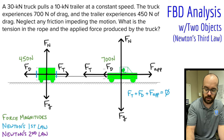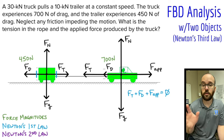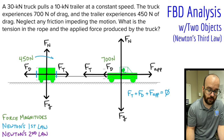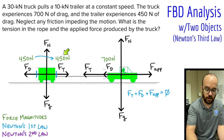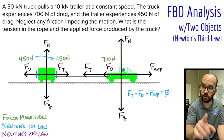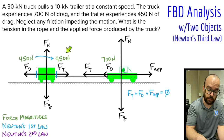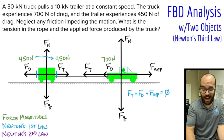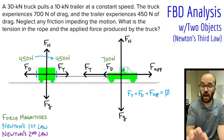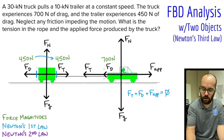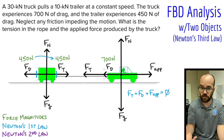So the tension force on the trailer is 450 newtons, marked in blue because I used Newton's first law. However, on the truck's free body diagram horizontally, I have two unknowns: the tension force and the applied force. I can't determine the applied force or the truck's tension using Newton's first law alone, since I'd need to know one of them first. Let's see if Newton's third law can help.